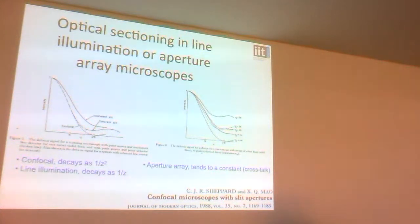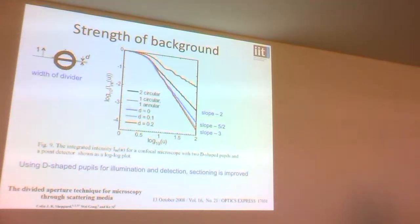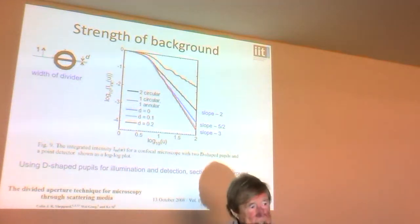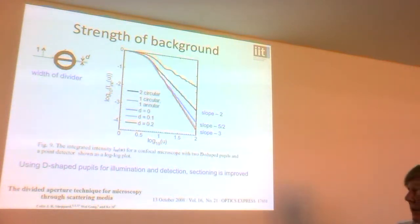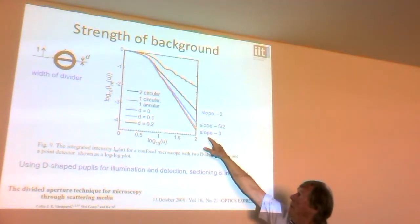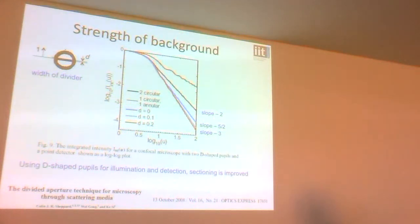Angular gating can also improve the optical sectioning. If you offset the system — splitting your lens aperture into two semicircles with light going in one side and out the other — you separate the illumination and detection axes. This gives improved optical sectioning. In fact, on this log-log plot, you get a slope of minus three, meaning the sectioning falls off as 1/z³ rather than 1/z², so angular gating improves the optical sectioning effect.